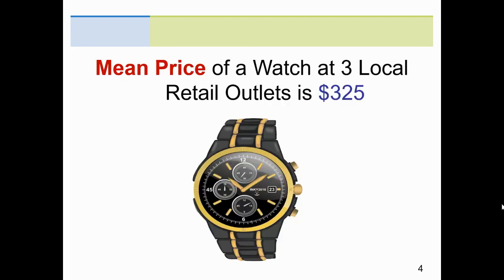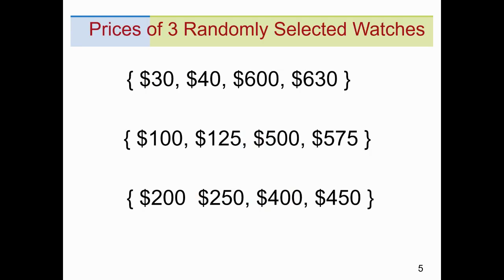Take a look at this. We're going to have the next few slides talk about the mean prices of a watch at three local retail outlets. I'm saying here that the mean of these watches at all these stores is $325. In the first store, you see the prices of the watches range from $30 to $630. Second store, $100 to $575. In the third store, these watches are $200, the most expensive is $450.